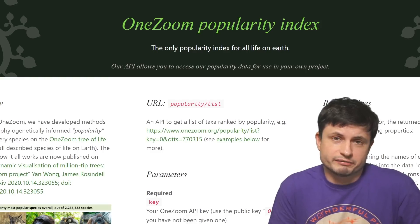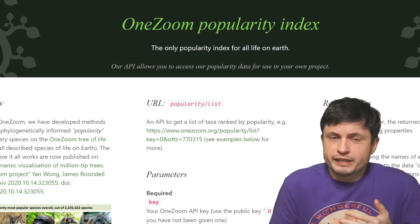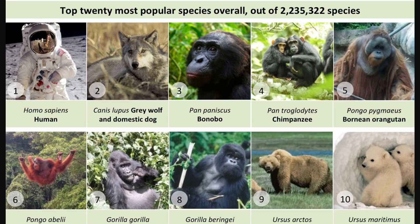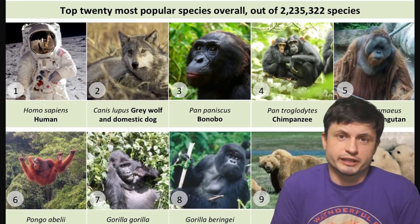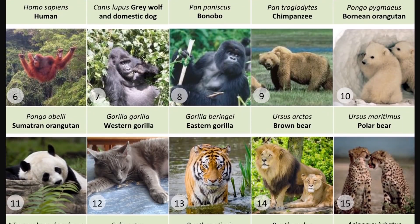On top of this, to make this a little bit more educational and for research purposes, the scientists here created what's known as the popularity index. If you're wondering, we're number one. And not surprisingly, dogs and wolves are number two. And interestingly, cats are only number 12.